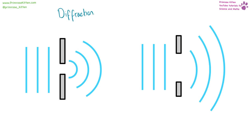Diffraction happens when a wave passes through a gap. Here we have a small gap and here we have a large gap. And the wave will curve around as it comes out of that gap. The amount of curvature, the amount of diffraction will depend on the size of the gap.